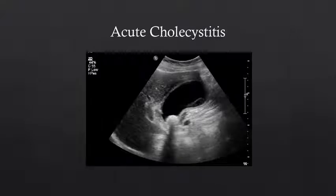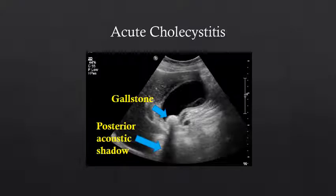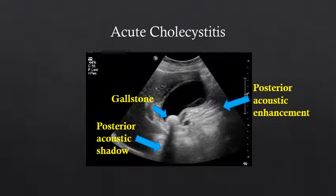Now let's look at a patient with an abnormal gallbladder. This person has acute cholecystitis. We see the gallbladder as a hypoechoic fluid-filled structure, but in the neck of the gallbladder, we can identify a gallstone. The gallstone appears hyperechoic because it is a very effective reflector, and there is a sharp interface between the fluid within the gallbladder and the gallstone. Deep to the gallstone, we have posterior acoustic shadowing because the sound waves cannot pass beyond the gallstone. Along the fluid-filled portion of the gallbladder, we can see posterior acoustic enhancement, as sound waves pass relatively unimpeded through the fluid, making structures deep to the fluid brighter than the adjacent soft tissue.